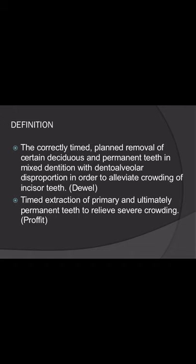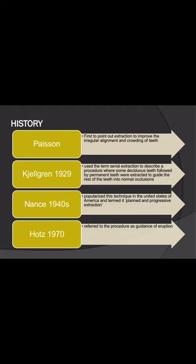There are two definitions. The first, given by Profit, states that serial extraction is the correctly timed and planned removal of certain deciduous and permanent teeth in mixed dentition with dento-alveolar disproportion, in order to alleviate crowding of incisor teeth. The second definition states that serial extraction is the timed extraction of primary and ultimately permanent teeth to relieve severe crowding.